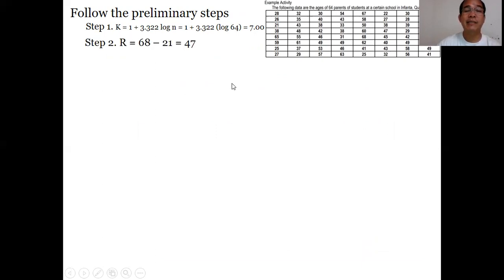Step number 2: highest minus lowest. What's the highest score? The highest score is 68 and the lowest score is 21. So 68 minus 21 is 47. Then you divide the answer of step 2 by step 1. So 47 divided by 7 equals 6.7. According to the rule, you have to round this to the next whole number, which is equal to 7.